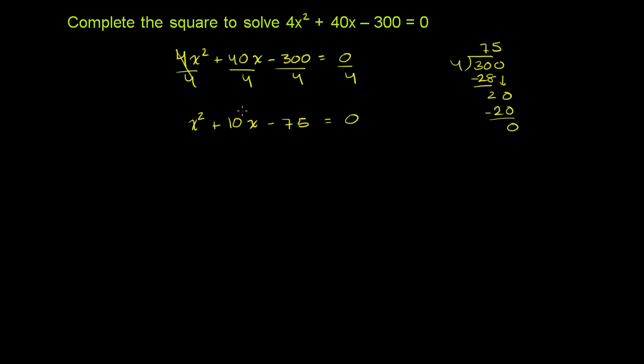So what we want to do is somehow turn whatever we have on the left-hand side into a perfect square. And I'm going to start out by getting this 75 out of the way. I'm going to put it on the right-hand side, just so it clears things up a little bit. So let's add 75 to both sides to get rid of the 75 from the left-hand side of the equation. And so we get x squared plus 10x. And then negative 75 plus 75, those guys cancel out. And I'm going to leave some space here, because we're going to add something here to complete the square. That is equal to 75.